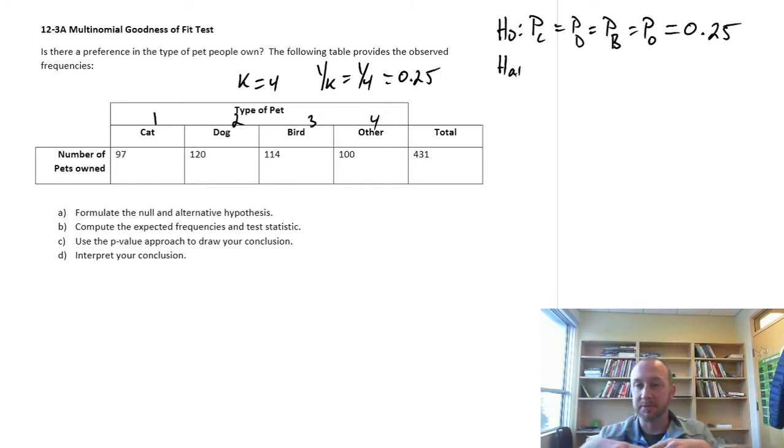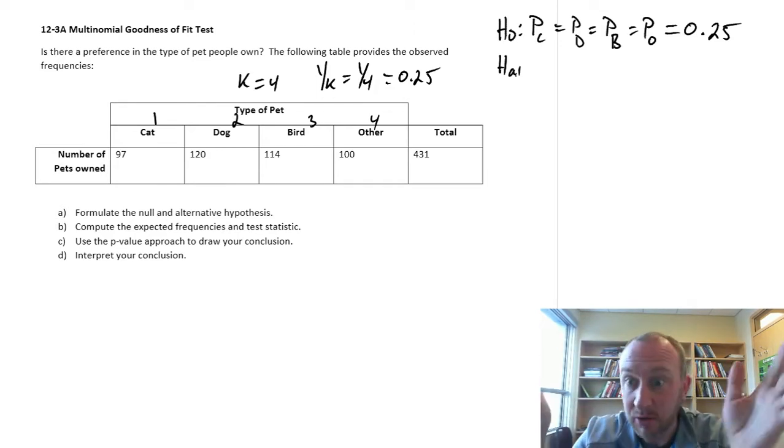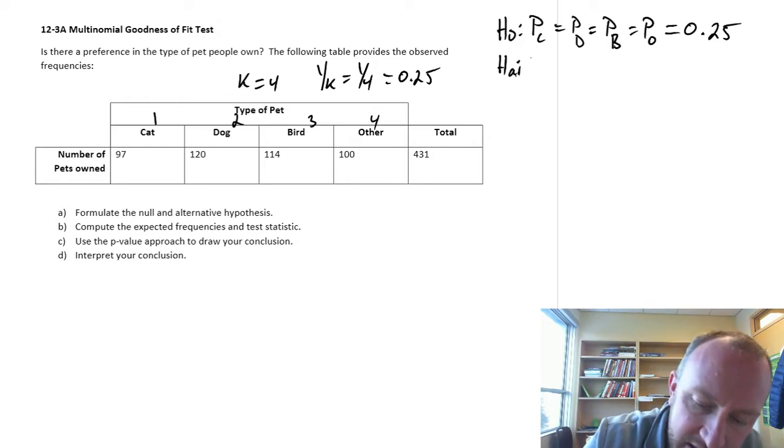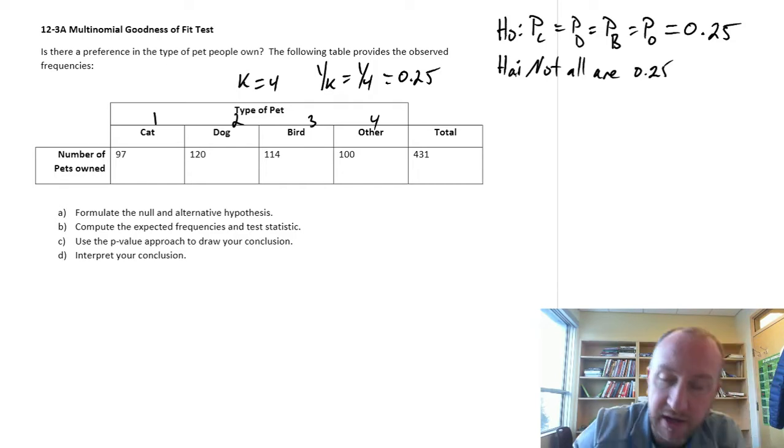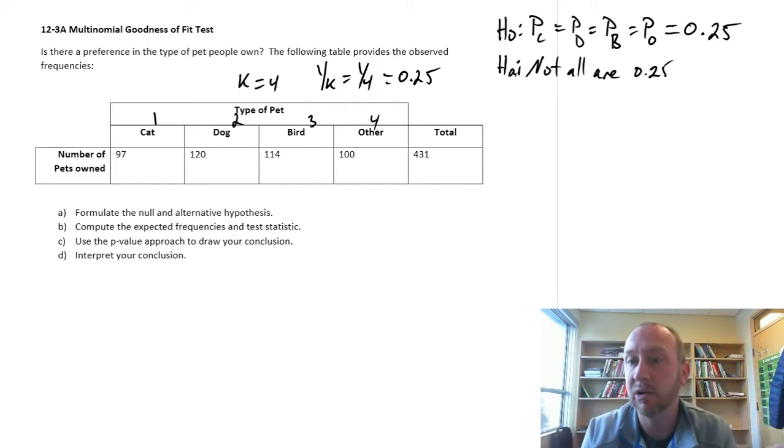All of these proportions are the same out of our sample, there's no difference. I have 4 different animals, 4 different pets, 25% on each of them. That's what our null hypothesis is, that they're all equally preferred, and the alternative is that not all are 0.25. As straightforward as that, I hope.